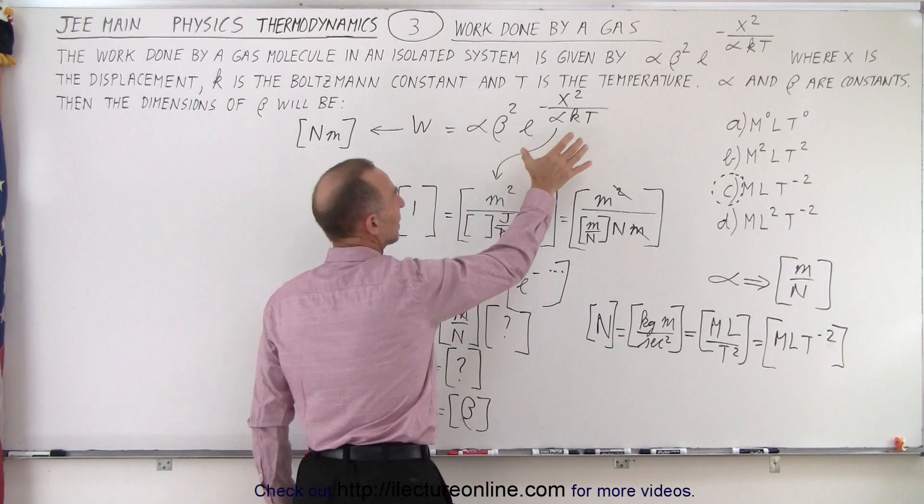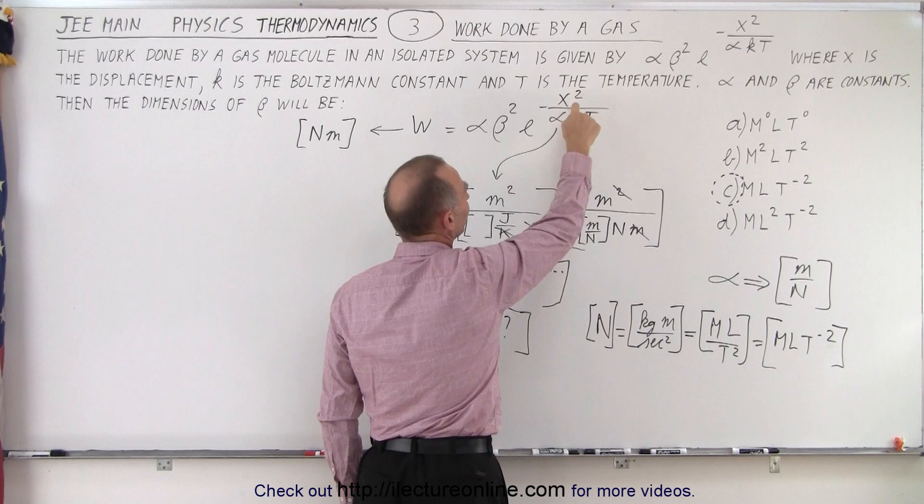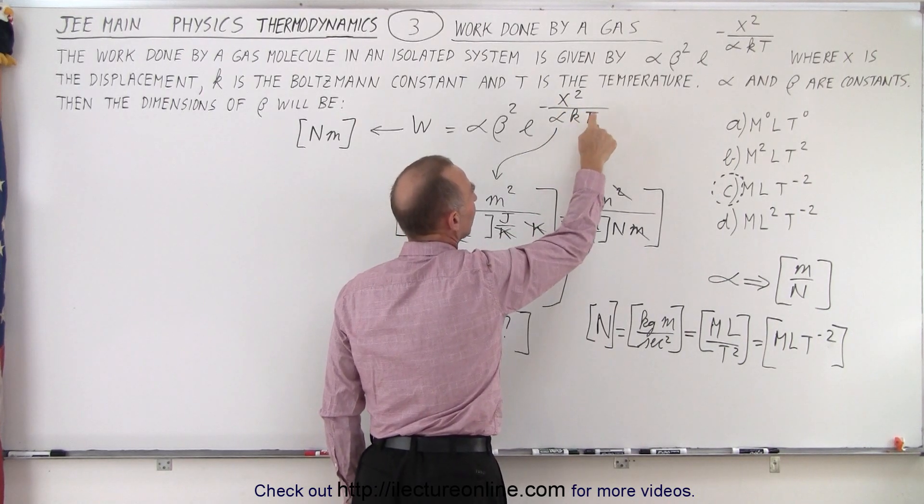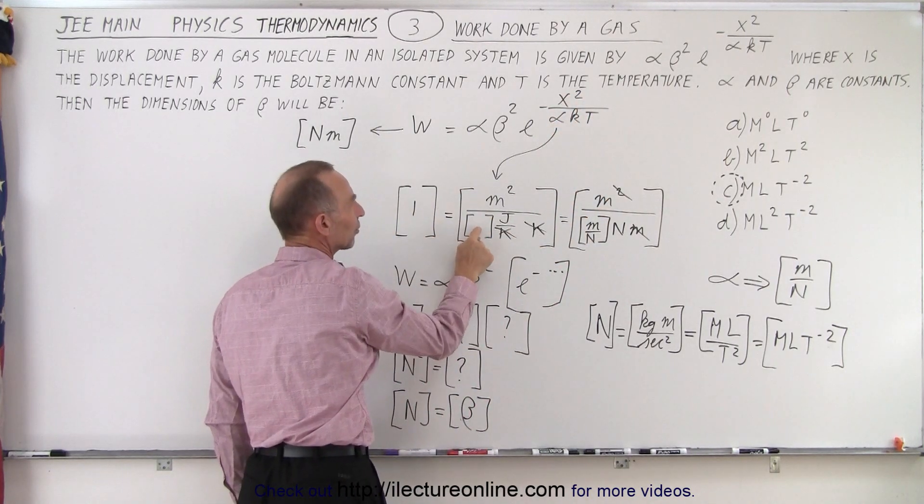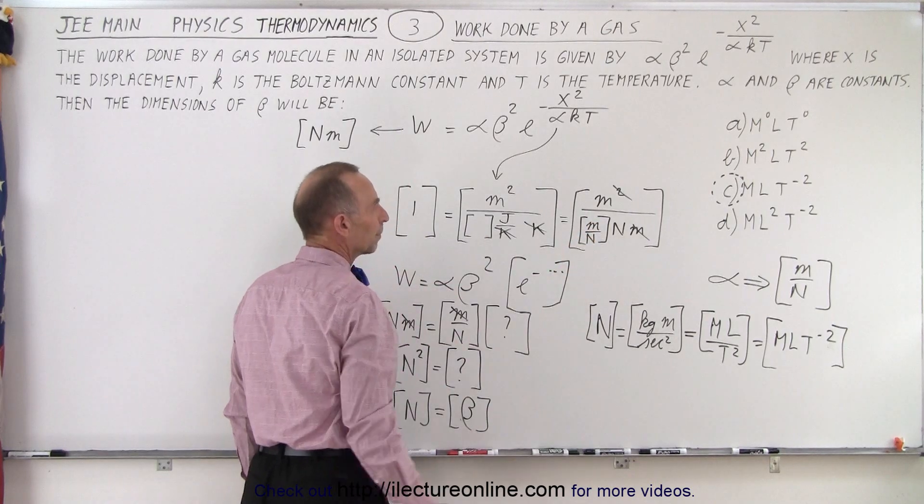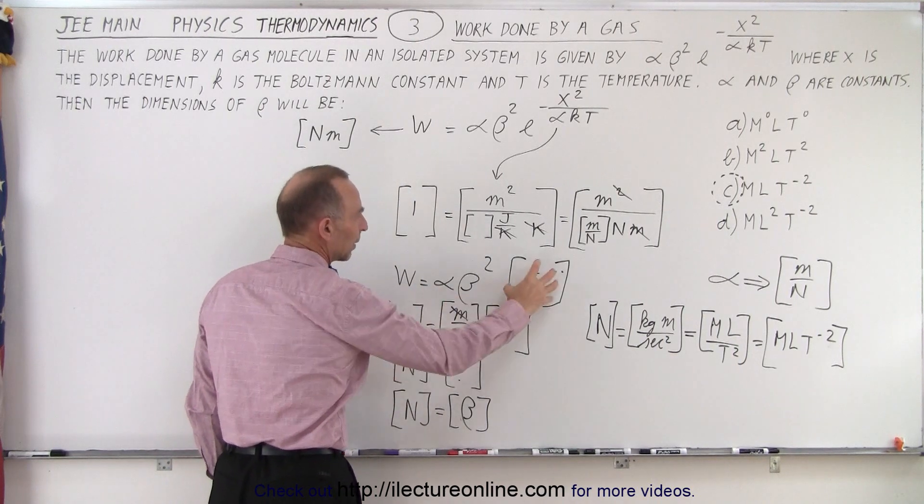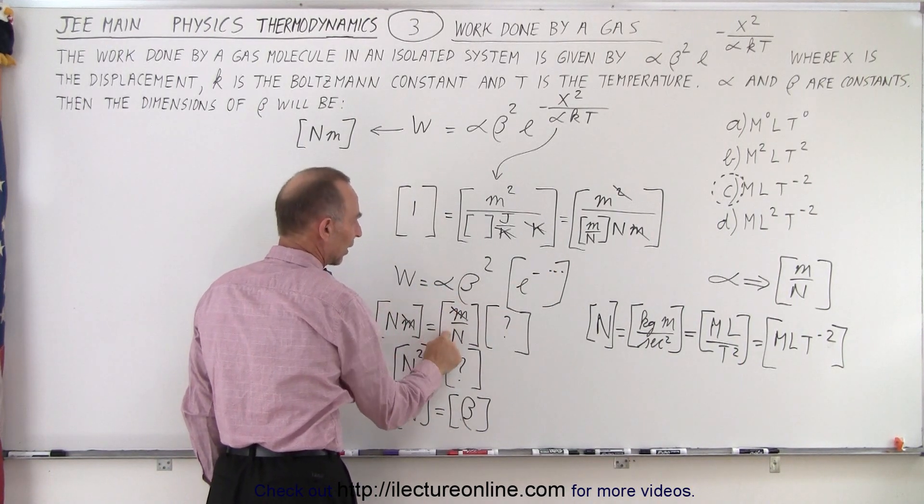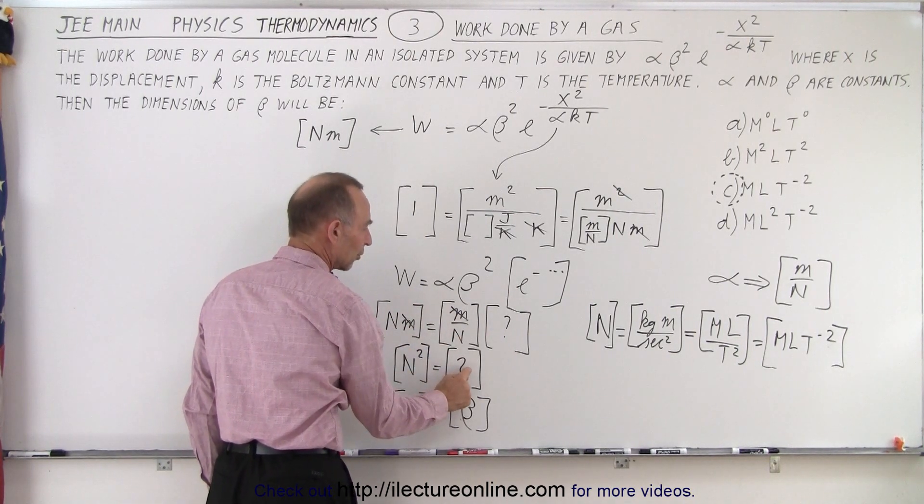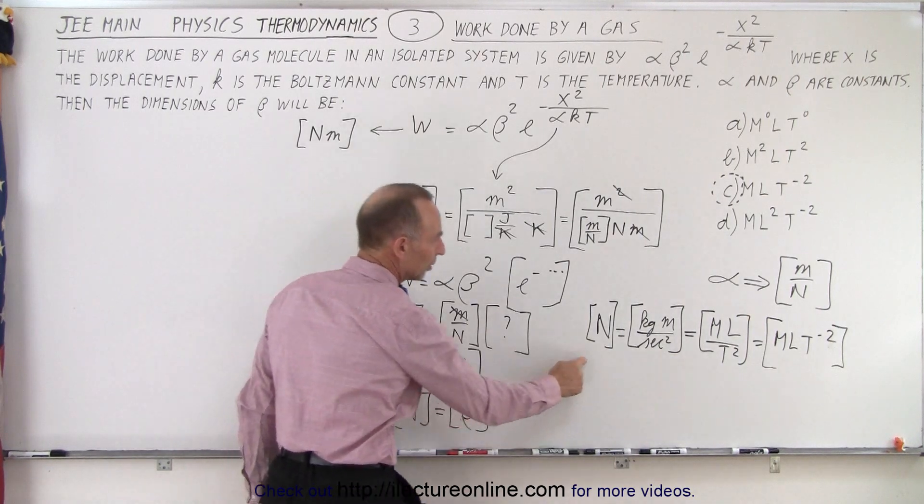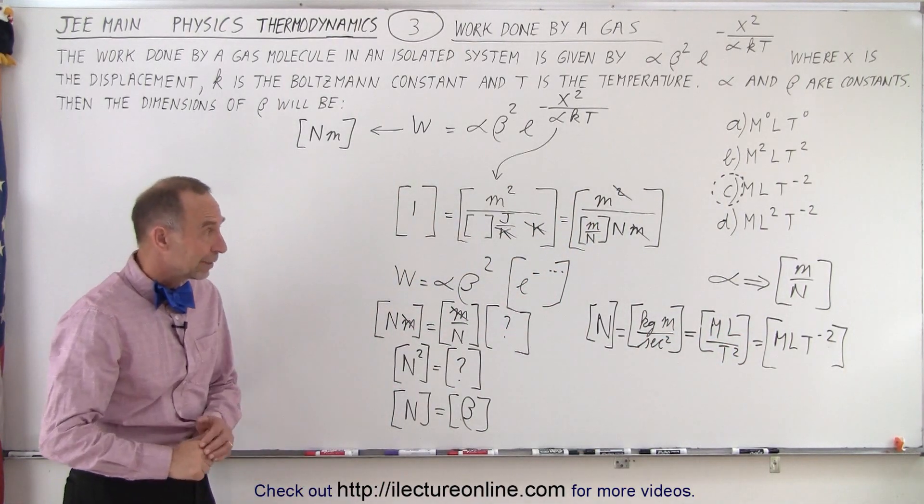Again, the way we do this here, strategy, this should be unitless, e to some exponent should just give us a number, so that means that meters squared, joules per Kelvin, and Kelvin, together with the units for alpha, and set that equal to one, we can find the units for alpha, which end up being meters per Newton. And then we know that work is equal to alpha times beta. Remember that this is unitless, so we know the units for alpha, we know the units for work, and then we need to unknown units for beta. Newton squared is the units for beta squared, Newton is the units for beta, Newton is kilogram meters per second squared, mass length over time squared. And that was the, that's the way in which we did it.